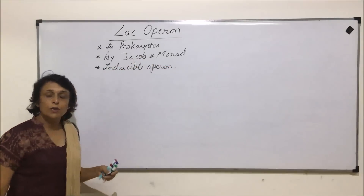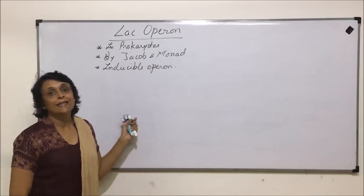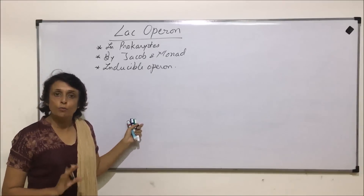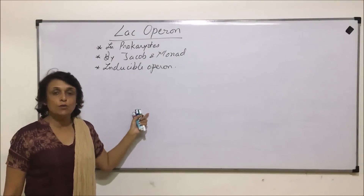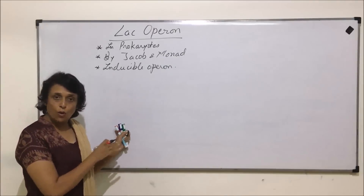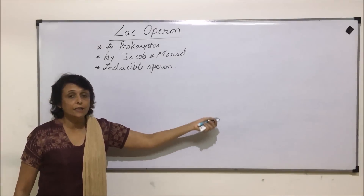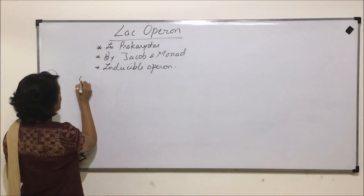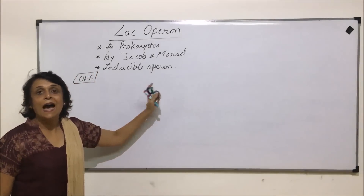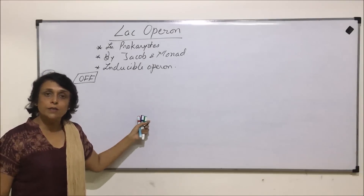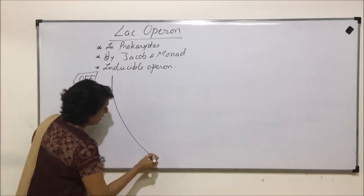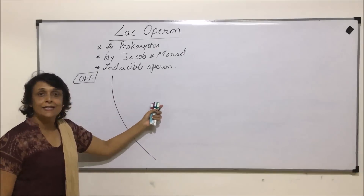Now let us talk about a normal situation — when there is no lactose available in the medium, how is this operon going to be? As the name tells us, it is going to remain in off mode. To understand the operon, we will draw two situations: the normal situation and the other which is either turned on or off.